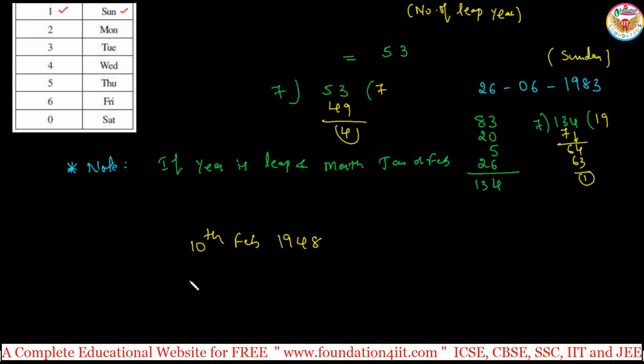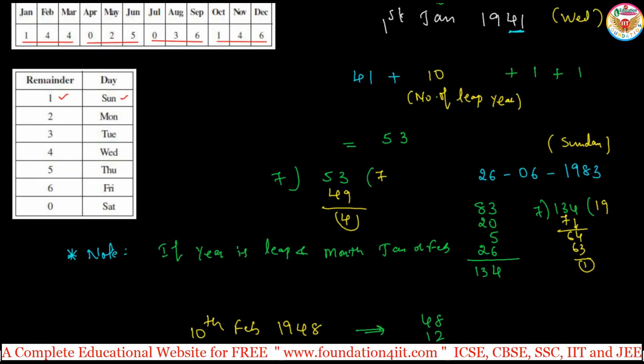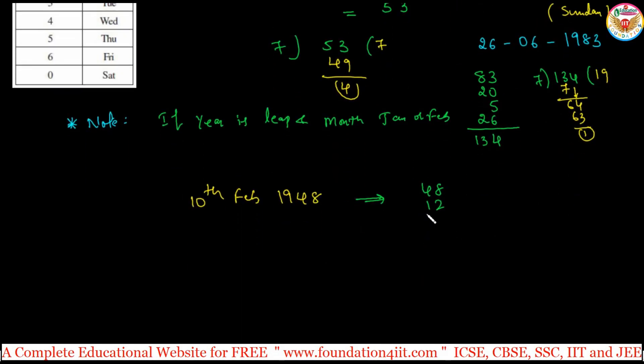According to this: 48, in 48, 4 table is 12 because 12 leap years. February code is 4, and the date is 10. 48 plus 12 plus 4 plus 10 equals 74. You can reduce one, so 73.